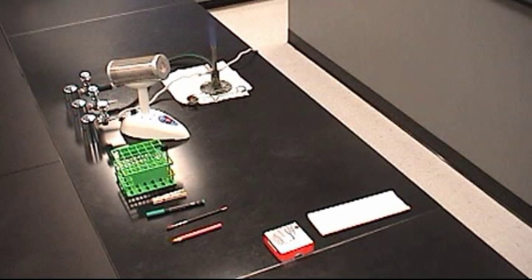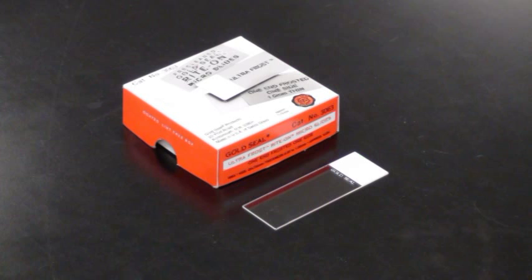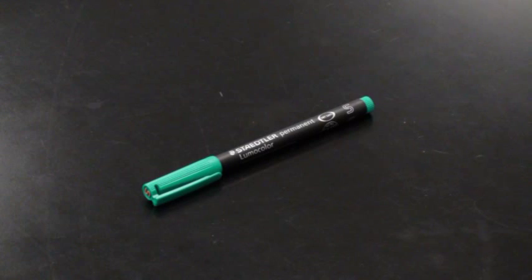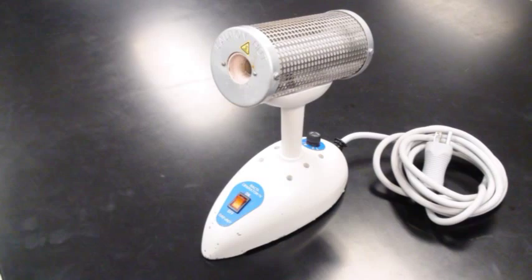To prepare the smear from a liquid medium you need a broth culture of the specimen in a tube rack, glass slide, inoculating loop, permanent marker, china marker, and bacterial incinerator.